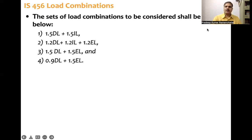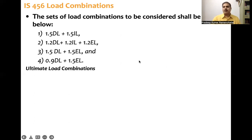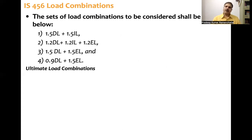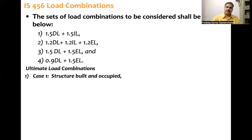One may wonder what the rationale behind these combinations is. For the first case — dead load plus imposed load — it means the structure is built and occupied, but there is no environmental or earthquake load. Built means dead load is present; occupied means imposed load is present. So Case 1 is structure built and occupied, with the usual partial safety factor of 1.5 for both loads.